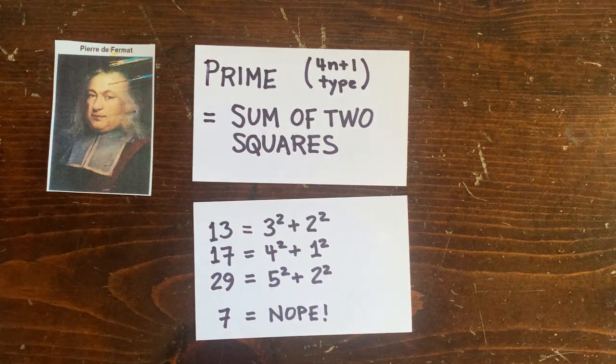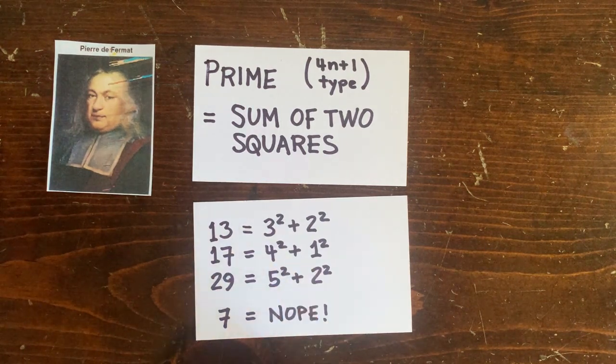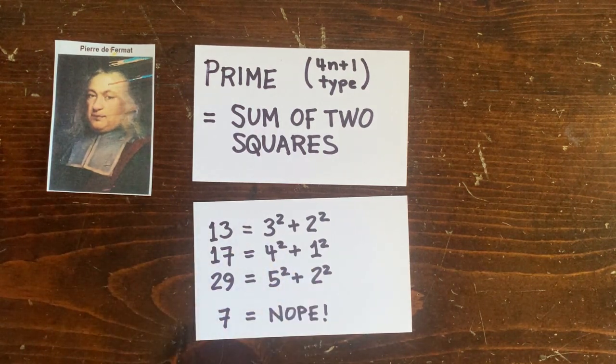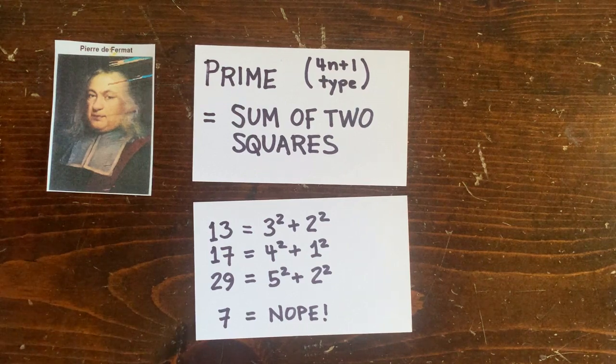For example, 13 is 9 plus 4, 17 is 16 plus 1, 29 is 25 plus 4. It's pretty amazing.